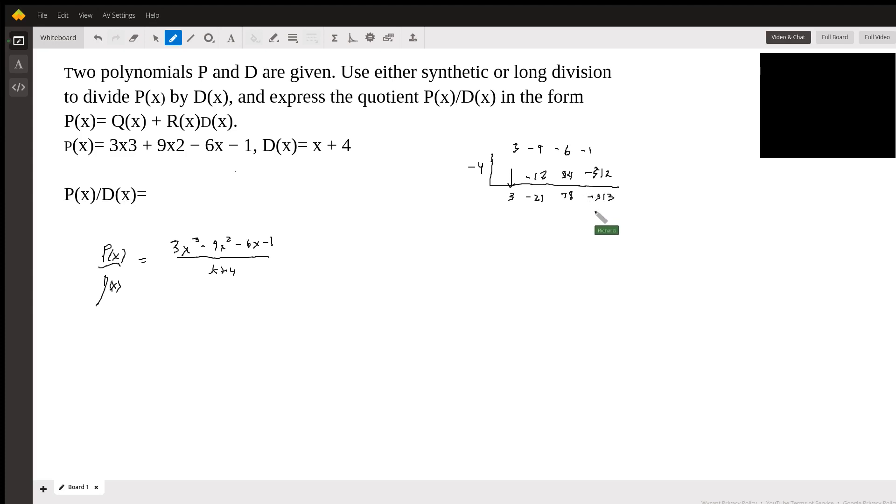Not a very friendly outcome. But we can now write out exactly what they want. P of X over D of X. It's going to be 3x squared minus 21X plus 78.